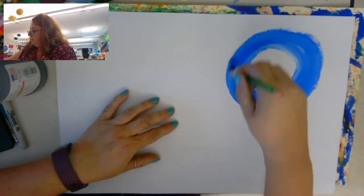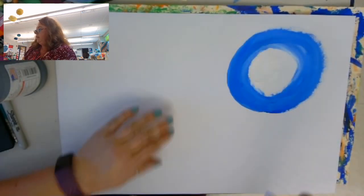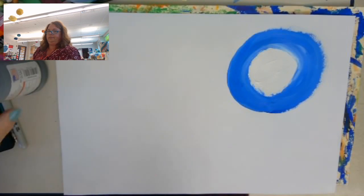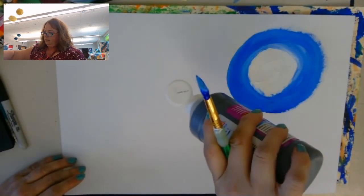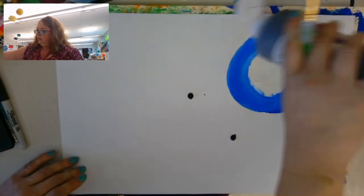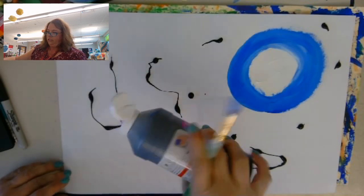Now I'm not rinsing my brush in between, and that's okay as long as you start with white. And now I'm going to take some black and I'm going to color—or paint, I should say—the rest of the paper black.